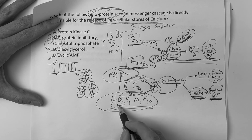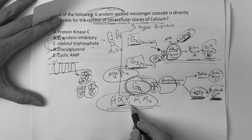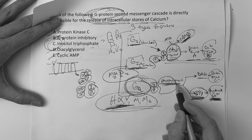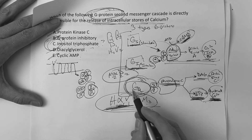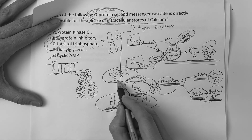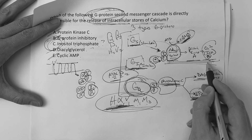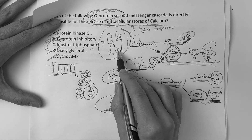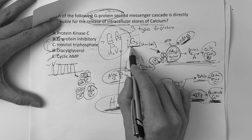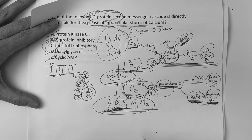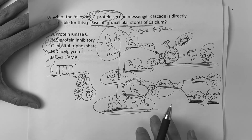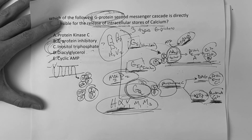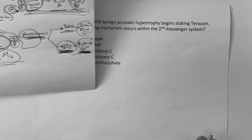If you activate a GQ receptor, you get more phospholipase C, more DAG, more IP3, more intracellular calcium. If you activate a GI receptor, you get less. If you activate a GS receptor, you get more cyclic AMP. That's how you work it — you've got to know this process.